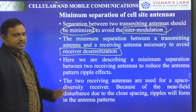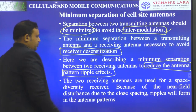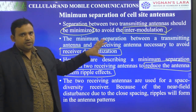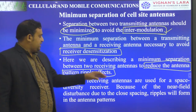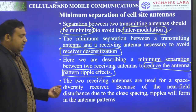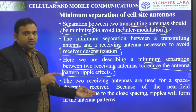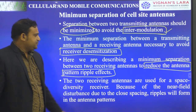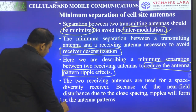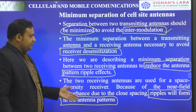The minimum separation between two transmitting antennas and a receiving antenna is also necessary to avoid receiver desensitization. Additionally, we need to reduce antenna pattern ripple effects. With respect to receiving antennas — these are used for space diversity receivers, which we already studied as the first topic. Due to close spacing, near-field disturbances occur and ripples form in the antenna pattern.